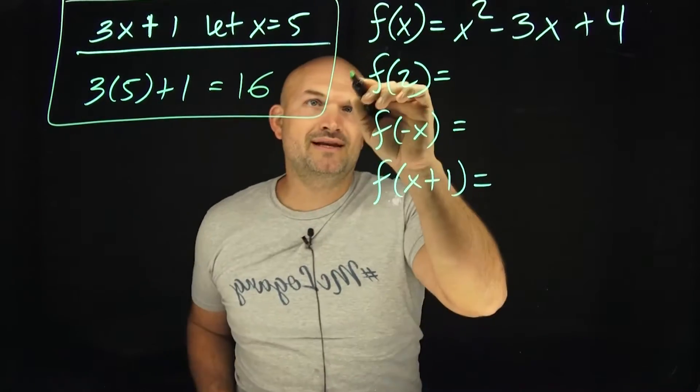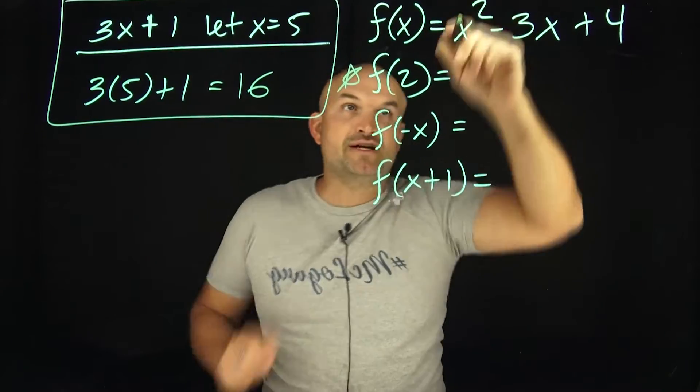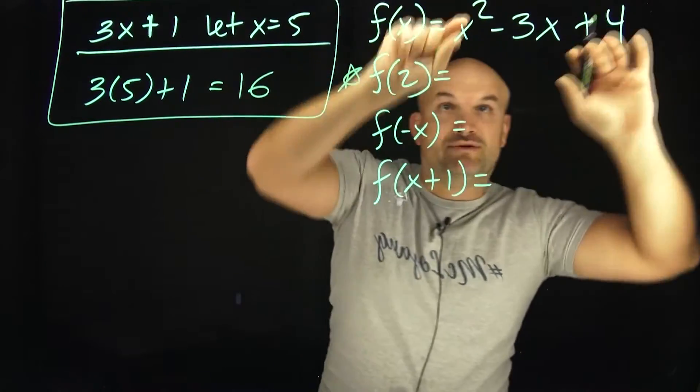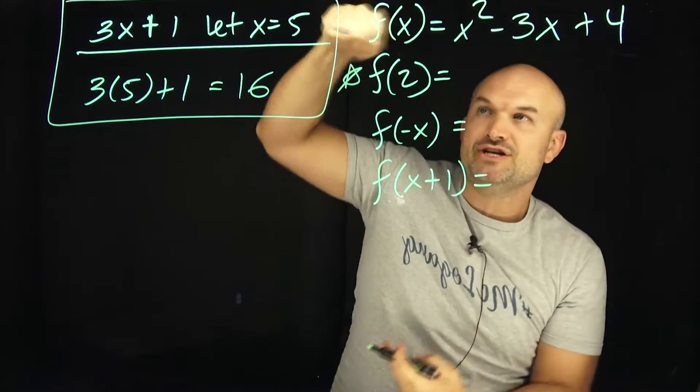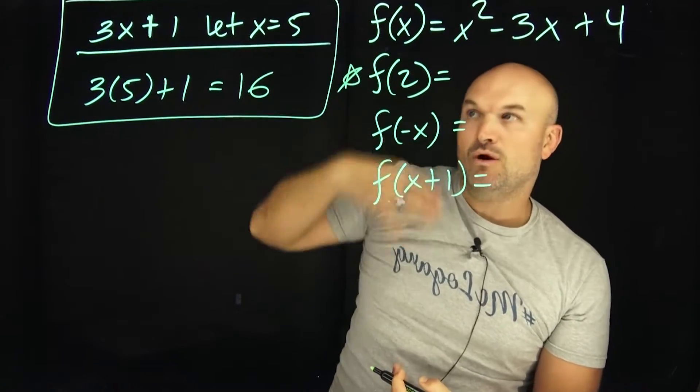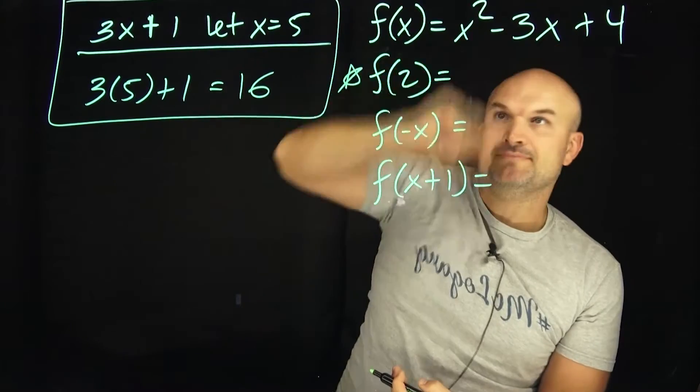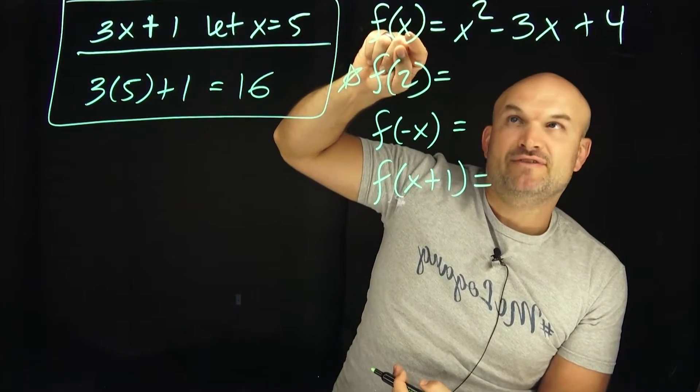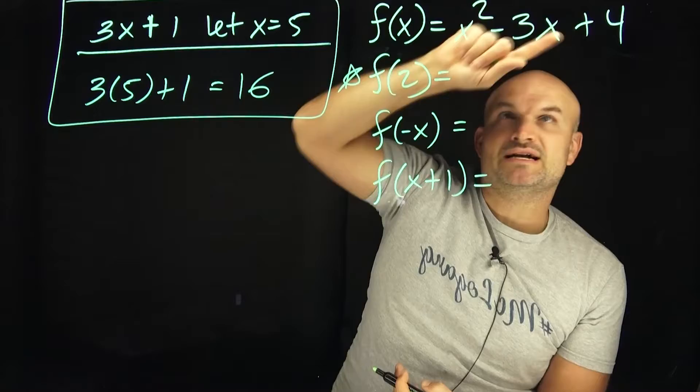That's really all we're doing when we have a problem like this. We have an expression which is going to be what we call our function. This is going to be the equation of our function. This f is just the name of the function, and x is going to represent our input value, what we can plug in to our equation. So in this case, we have f of x. That's the input variable, and then our expression x squared minus 3x plus 4.